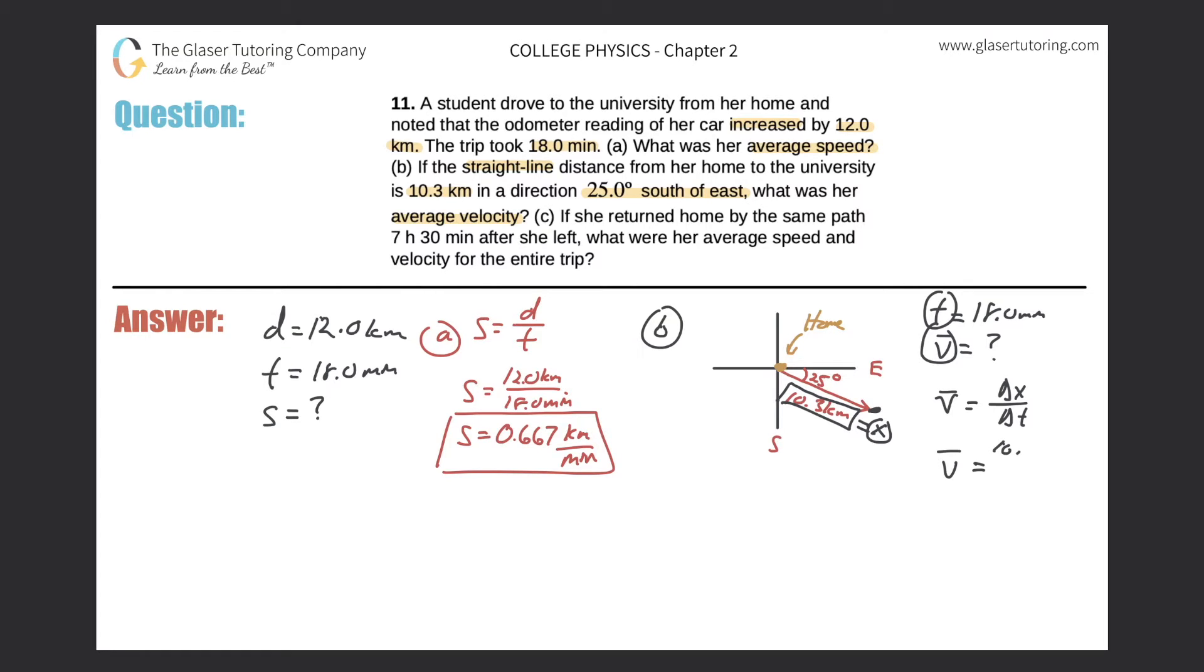So it'd be 10.3 kilometers divided by 18.0 minutes. Okay, wonderful. Now it doesn't ask us specifically what units they want it in, so I'm just going to leave it in kilometers per minute. So just take 10.3 divided by 18, and we come to a value of 0.572. And remember, three significant figures here, because the values here are all three. And this is in kilometers per minute. So that would be the average velocity.